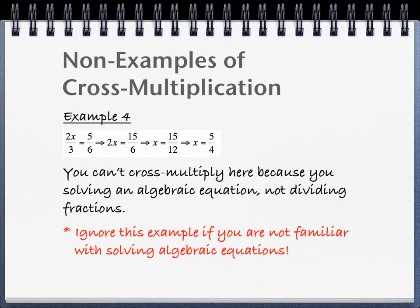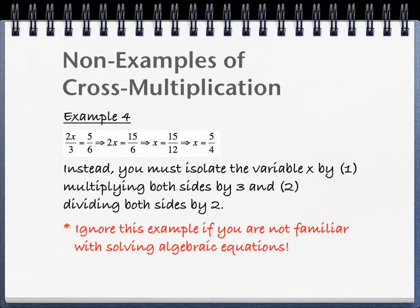So here we're solving an equation for x. And so what we're going to have to do here is isolate the variable x to find the answer. So first we're going to multiply this by 3. So we're going to multiply both sides by 3 to get 2x equals 15 sixths. Then we're going to divide both sides by 2 to get that x by itself. And that gets us the answer x equals 15 twelfths, which can be reduced to x equals 5 fourths.